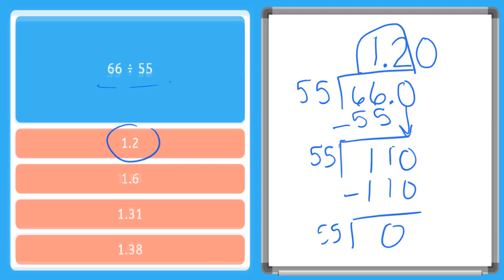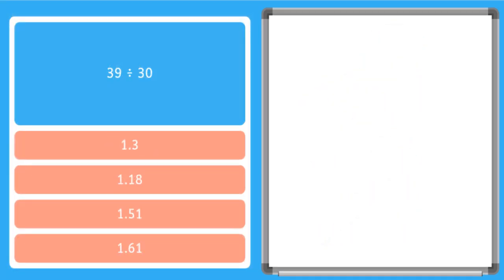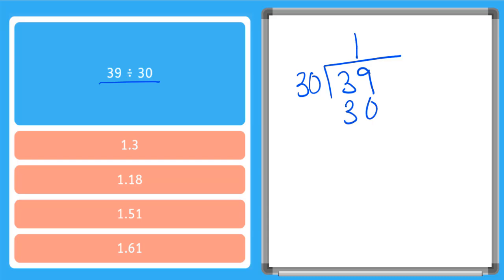Let's do one more together. Our next one says 39 divided by 30. So let's write that out. 30 goes into 39 how many times? 30 times 1 goes into there — that gives us 30. When we subtract we end up with a 9. So how many times does 30 go into 9? Less than 1.